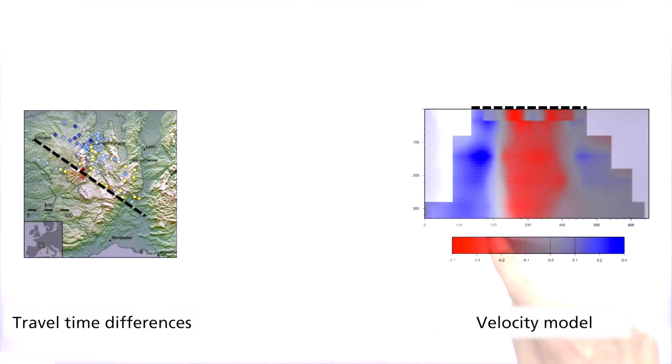This image shows a model of P-wave velocities under the Massif Central, along the profile line shown here. Reddish colors indicate regions with lower velocity, and bluish colors regions with increased velocity. You can clearly see a region with lower velocity in the middle. The reason for this are variations in the density and the elastic properties of the rock.